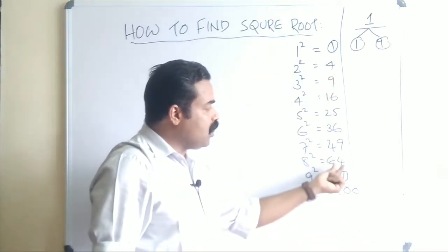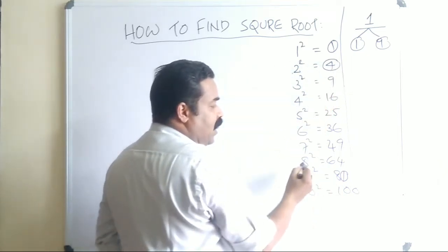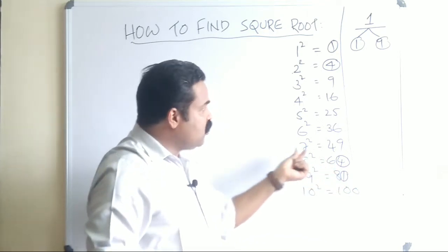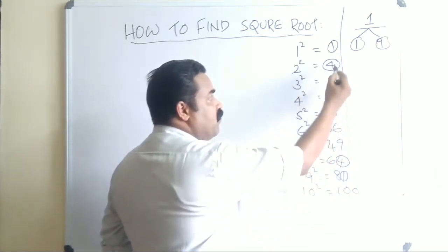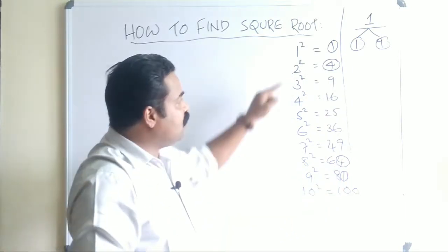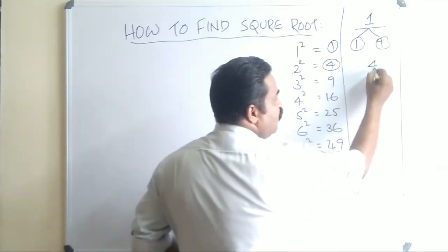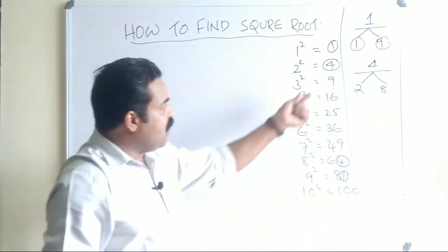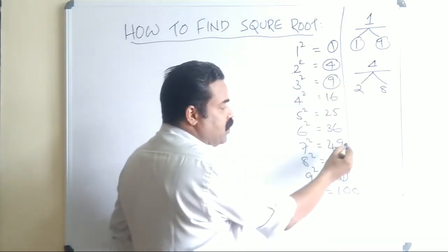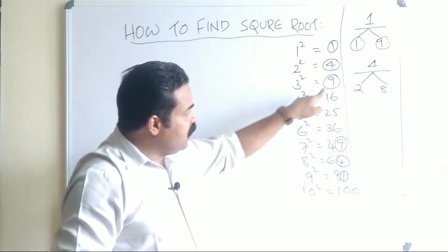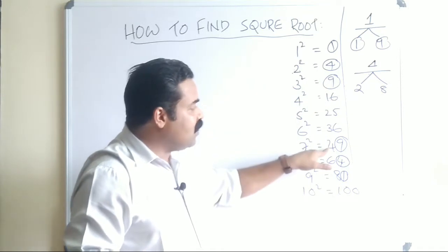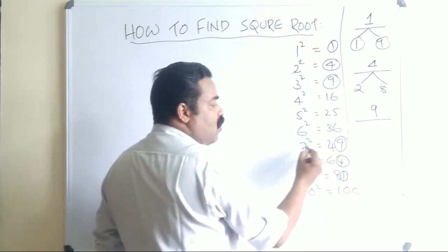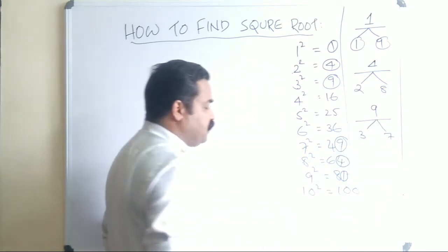Next: 2² = 4 and 8² = 64 — both end with 4. So any perfect square ending with 4 has a root ending with either 2 or 8. Then for 9: 3² = 9 and 7² = 49 — both end with 9. So any perfect square ending with 9 has a root ending with either 3 or 7.